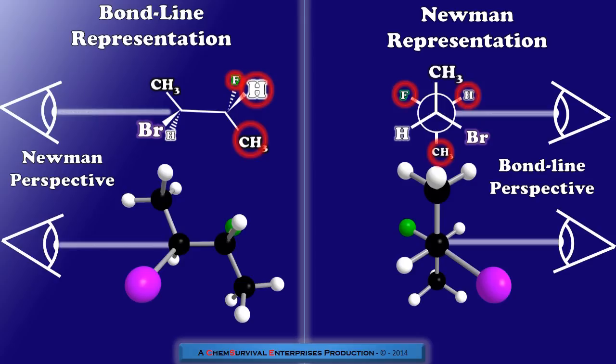Whereas those that are on the closer of the two carbons along which we're siting, also end up in an alternating pattern around the Newman projection, but this time with their bonds drawn all the way to the center.